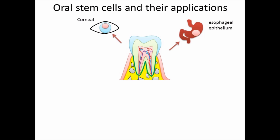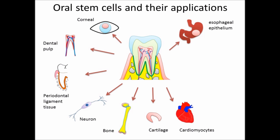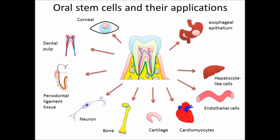Oral mesenchymal stem cells have the capacity to give rise to cells that can help the regeneration of dental pulp, periodontal ligament tissue, neuron, bone, cartilage, muscle, blood vessel, liver, pancreas, and so on. Therefore, they have excellent regenerative ability.